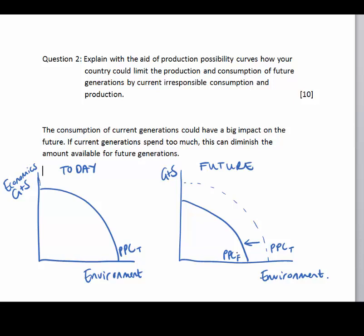The whole idea of this graph is to show that we've used so much today that the future PPC curve has shifted leftward or decreased. You can also show that if I produce goods and services of amount GS1, then today I can have an environment quality of E1 — that's good environment quality. For the same goods and services in the future, I cannot have E1; I can only have an environment quality of E2. E1 is not available anymore because it's on the PPC curve that no longer exists. So it's important to show that my options decreased.